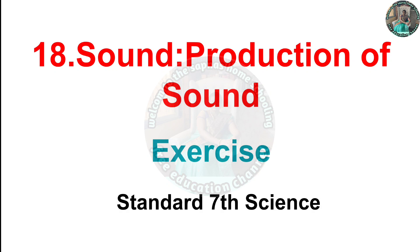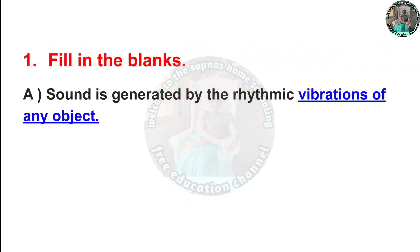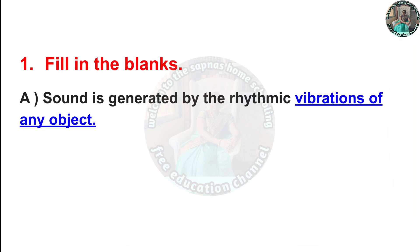First question: Fill in the blanks. (a) Sound is generated by the vibration of any object. This means that when any object vibrates, sound is produced through that vibration.